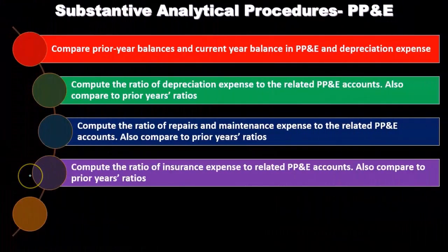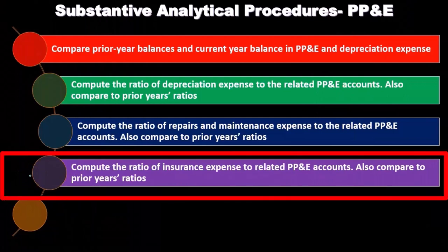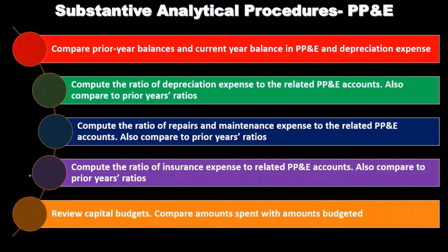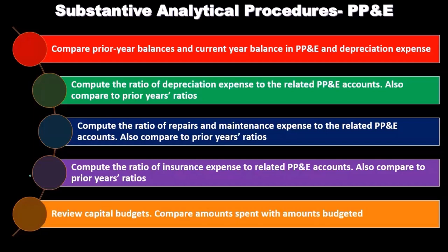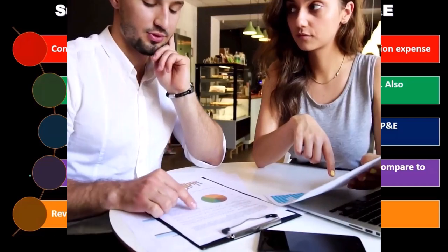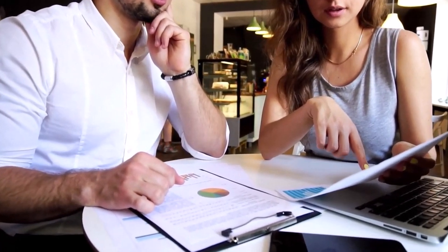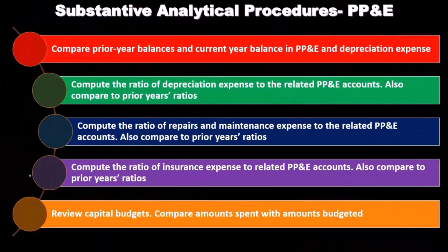We can compute the ratio of insurance expense to related PP&E accounts and compare that to prior years. We can also review the capital budget — publicly traded companies should have a capital budget outlining planned spending on capital assets — and compare amounts actually spent with amounts budgeted to spend.